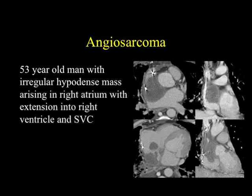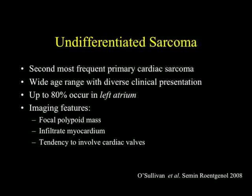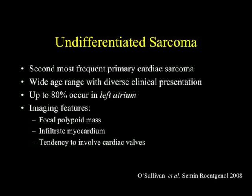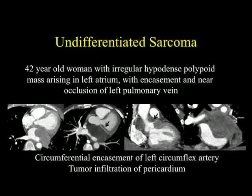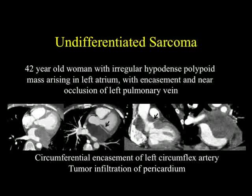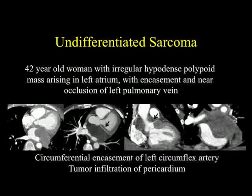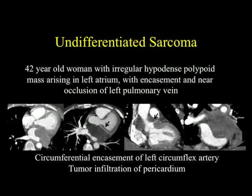Beyond angiosarcoma, undifferentiated sarcomas are the second most frequent primary cardiac sarcoma, with a wide age range and diverse clinical presentations. Location is somewhat different — these occur in the left atrium rather than the right atrium. Imaging features include polypoid masses, infiltration of the myocardium, and a tendency to involve the cardiac valves. Here's a nice example: a 42-year-old woman with an irregular hypodense polypoid mass arising in the left atrium, which grew to encase the left pulmonary vein, nearly occluding it, with circumferential encasement of the left circumflex coronary artery and tumor infiltration of the pericardium — very extensive.